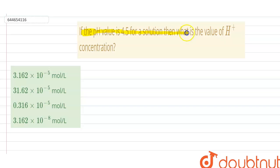the pH value is 4.5 for a solution, then what is the value of H+ ion concentration? So here